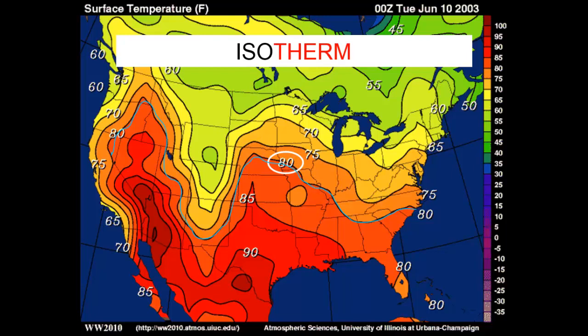The prefix 'iso' is from the Greek for equal, and the suffix 'therm' is from the Greek for heat. Hence, isotherms are lines which connect places on the map which are of equal heat or equal temperature. Let's look at another example: the line labeled 85. The places on this line have a temperature of precisely 85 degrees. And the places that lie between the two isotherms labeled 80 and 85 — that's the dark orange area — have a temperature of between 80 and 85 degrees.